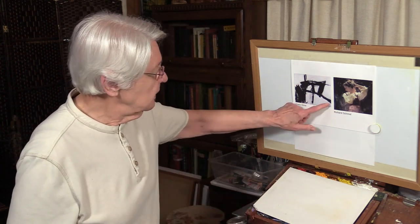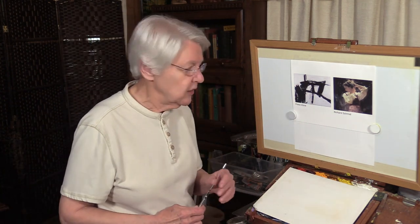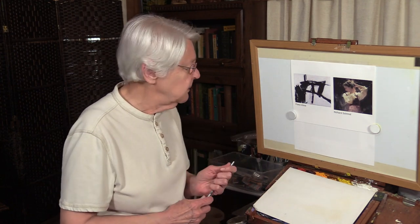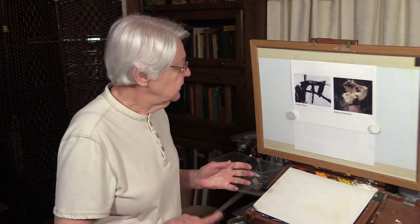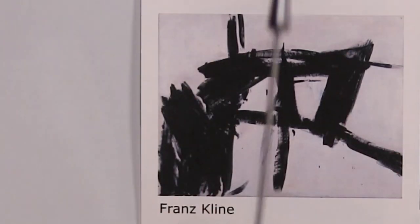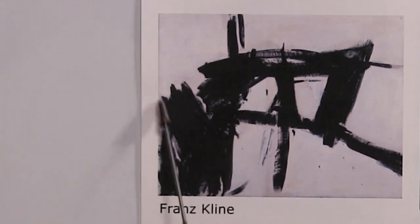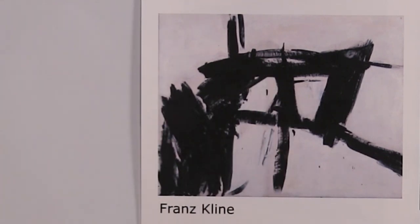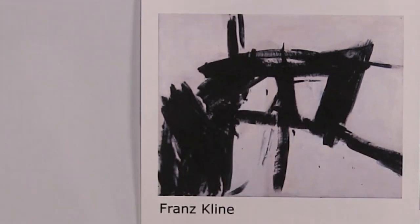Here's a real good example of an abstract expressionist painting, and a good example of negative and positive space. In this case, the positive space is where the action is taking place — the brush action, you might say. The brush action is obviously the black here; that's the positive space. The space around that is the negative space.